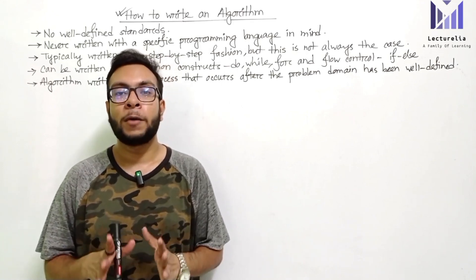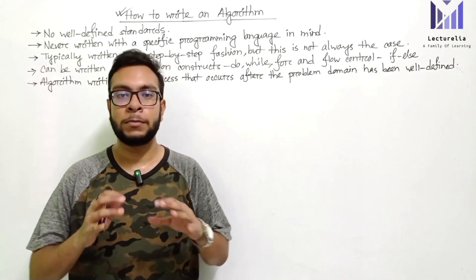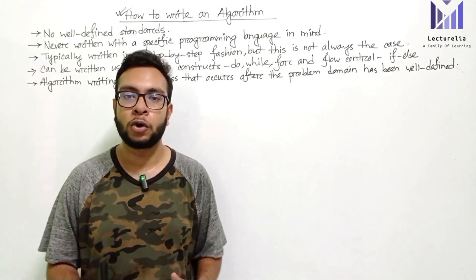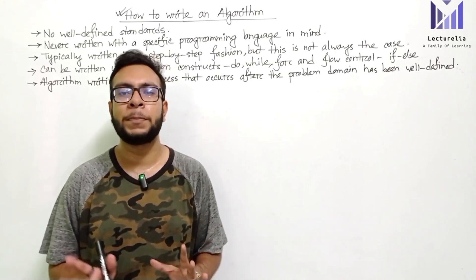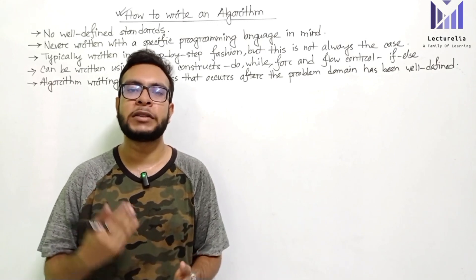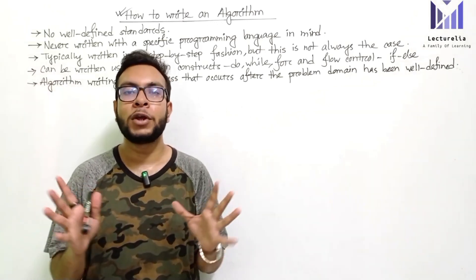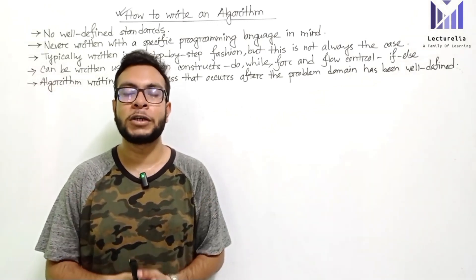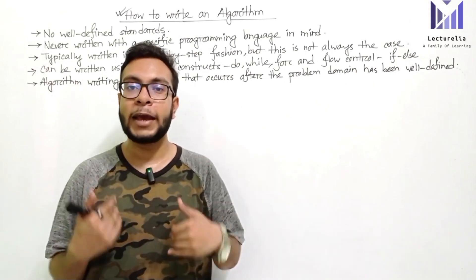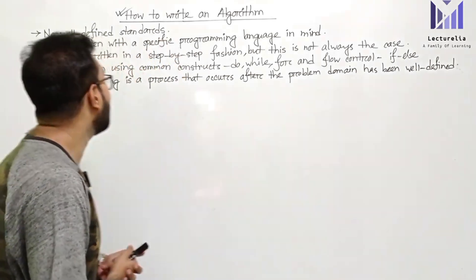When you start this process, you have to know that domain knowledge is required. Understanding the problem domain is needed, and that's why we start. It takes a deeper understanding of this algorithm in our way of thinking, and then we start to make this algorithm.